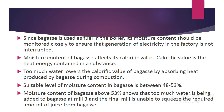Bagasse is used as fuel in the boiler, and its moisture content should be monitored closely to ensure the generation of electricity in the factory is not interrupted. As mentioned in a previous video, bagasse is burned in the boiler to produce heat energy. This heat energy is used to boil water to produce steam, and as the steam drives the turbine it produces electricity to be used in the factory. Moisture content of bagasse affects its calorific value, which is the heat energy contained in a substance.